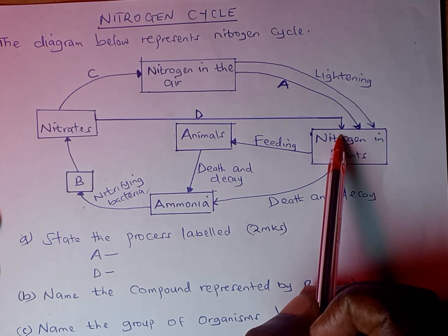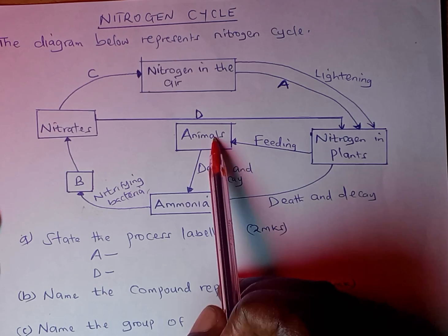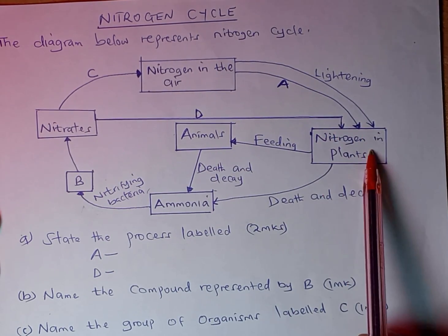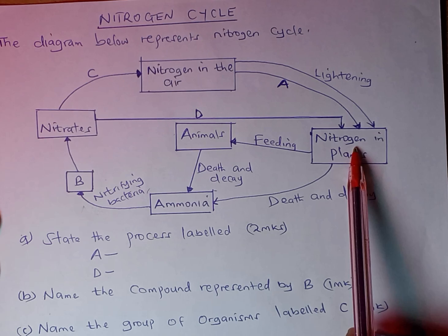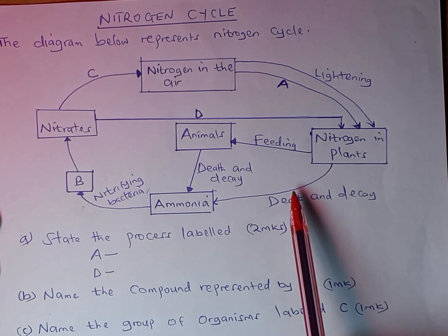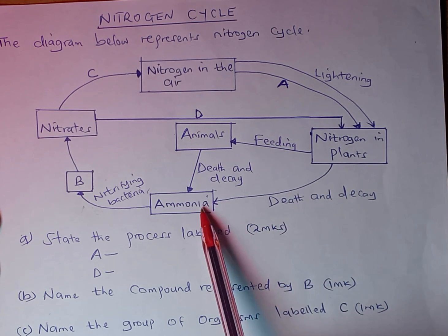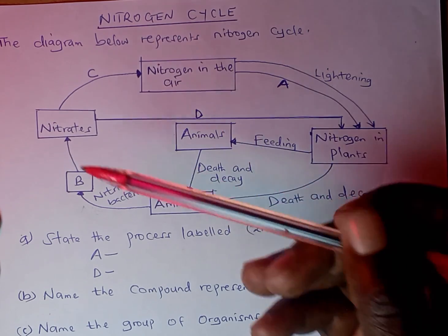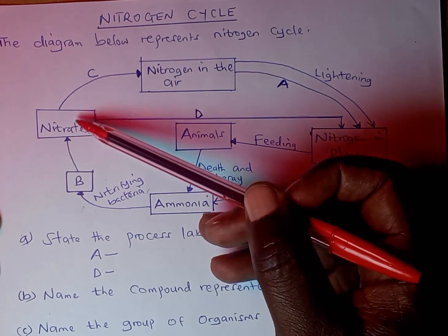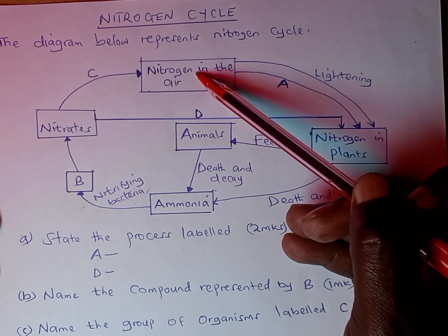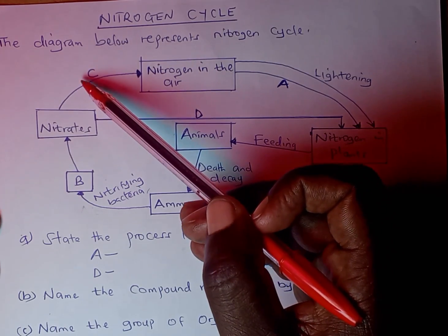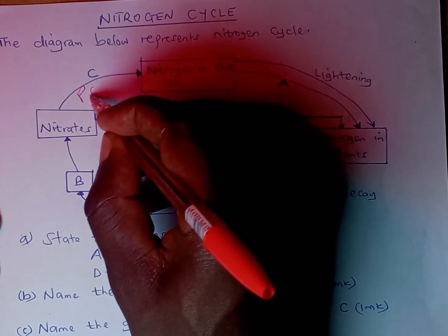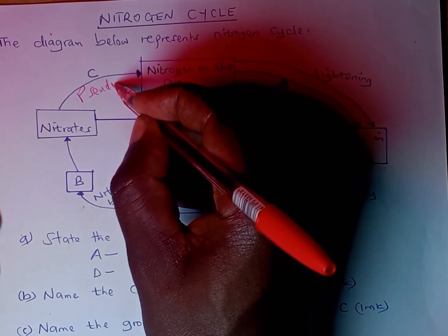The nitrites are converted into nitrates, and from nitrates plants are able to absorb them from the soil and convert them into plant proteins. This then moves to animals and the cycle continues. Also, when plants die their protein material is decomposed and converted into ammonia. The nitrates can also be converted back into free nitrogen by denitrifying bacteria — an example being Pseudomonas bacteria.